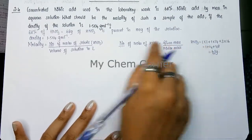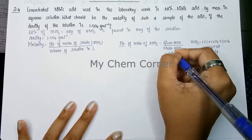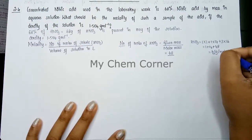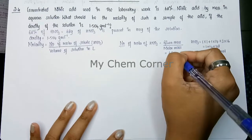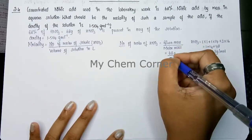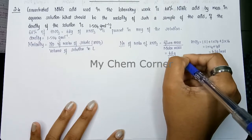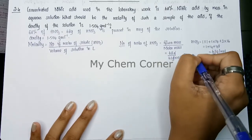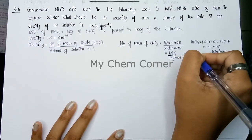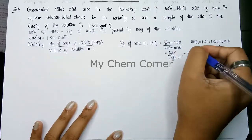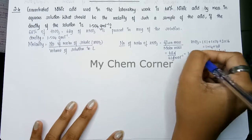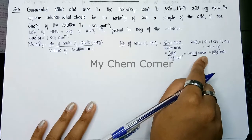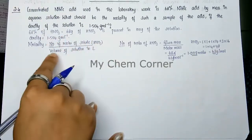Substituting to find number of moles: given mass is 68 grams divided by molar mass 63 grams per mole. Grams cancel, giving 68/63 = 1.079 moles. So the number of moles of HNO3 is 1.079 moles — that's our numerator.